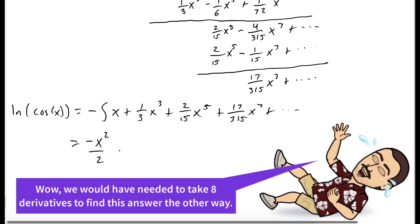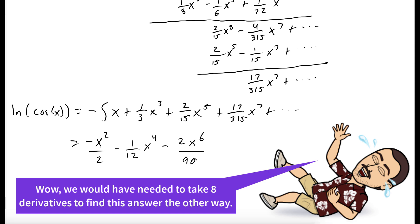When we evaluate each of these integrals, we get negative x squared over two minus one twelfth x to the fourth minus two x to the sixth over 90 minus seventeen x to the eighth over 2520, plus higher order terms. These are the first four terms.